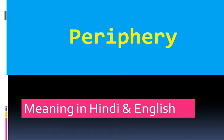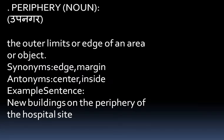Periphery. P-E-R-I-P-H-E-R-Y. Its meaning in English: the outer limits or edge of an area or an object. It is used as a noun in a sentence.